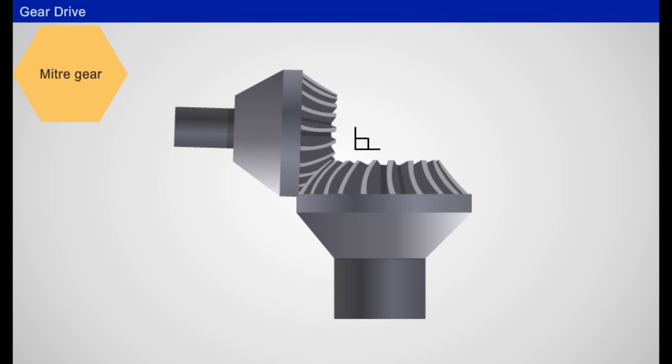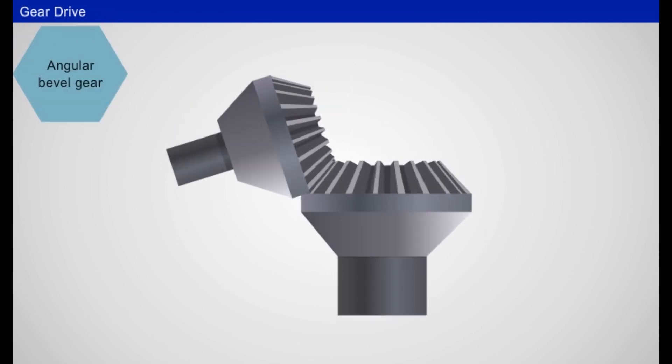If the angle between the two shafts is 90 degrees, then it is called mitre gear. If the angle between the two shafts is less than 90 degrees, then it is called angular bevel gear.